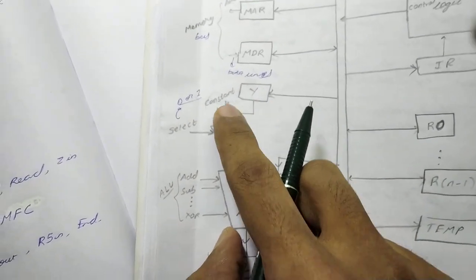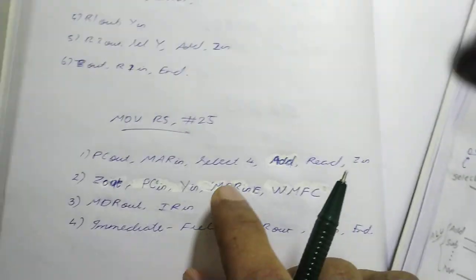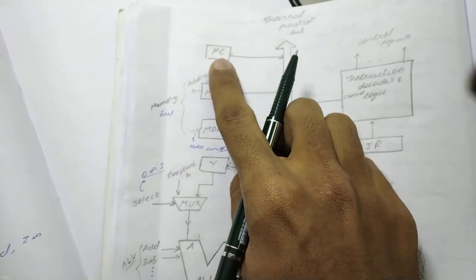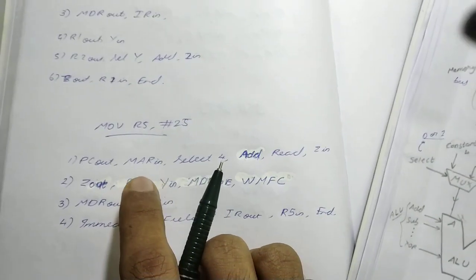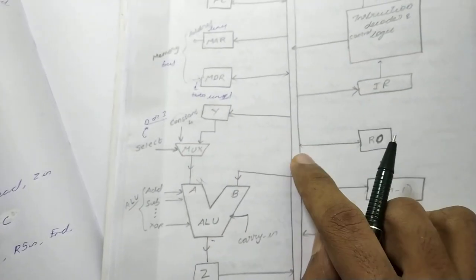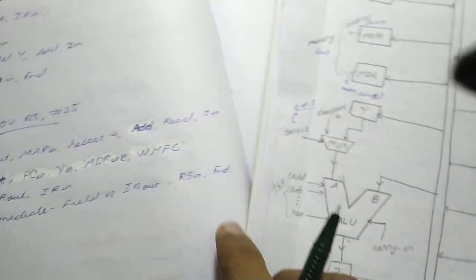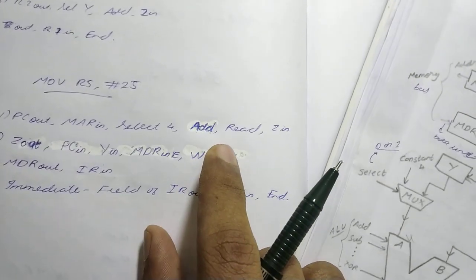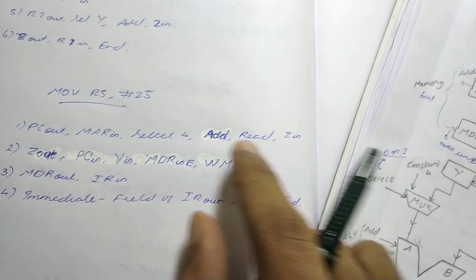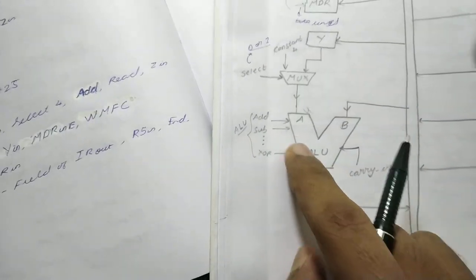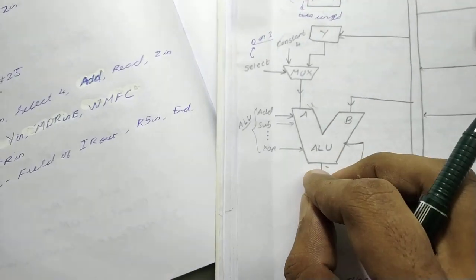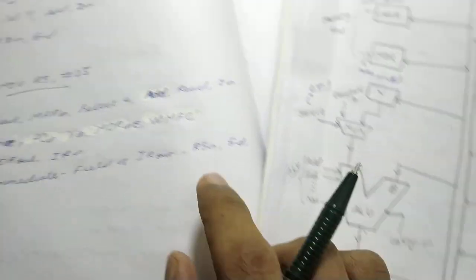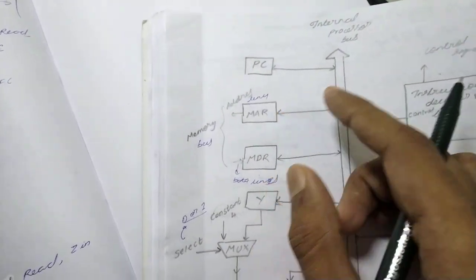We do Select 4 — the constant 4 is selected — and then Add. What is on the internal processor bus now? The value from PC is there because of PC out. It comes into B, and then after the Add operation, the incremented value is stored in Z via Z in. So the sum — the incremented PC value — is now stored in Z. We also issue a Read signal at this point.